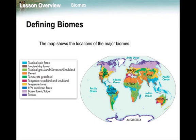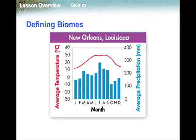However, latitude is not how we determine a biome. More often than not, we use temperature and precipitation data to determine a biome.